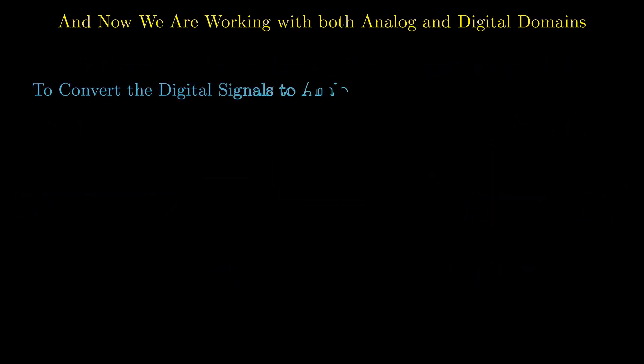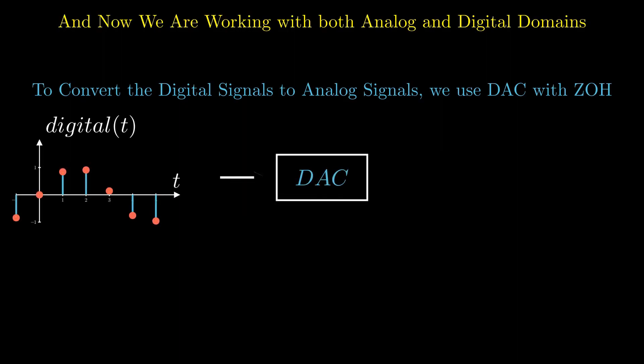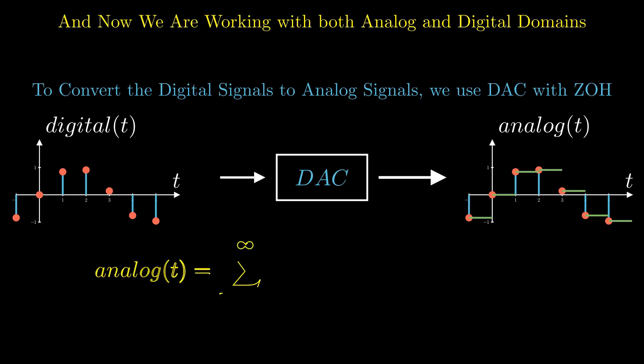To convert digital signals to analog signals, we use digital to analog converters, often incorporating with zero-order-hold techniques. When a digital signal is fed into the converter, it produces an analog signal by simply holding the value of each sample. This can be mathematically expressed as follows.